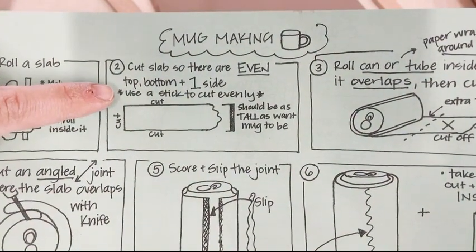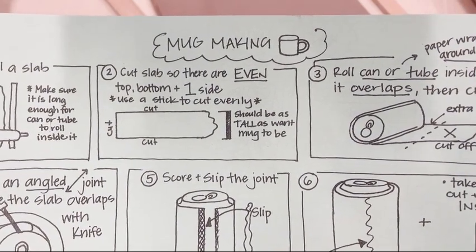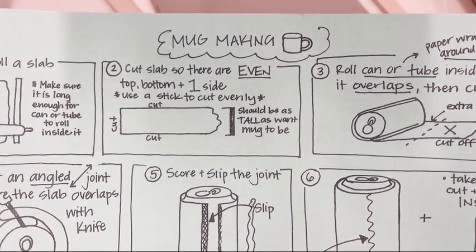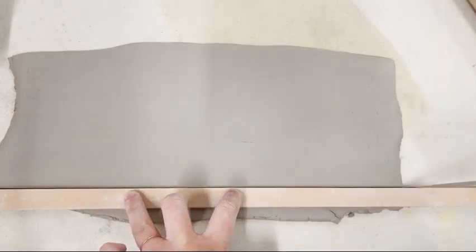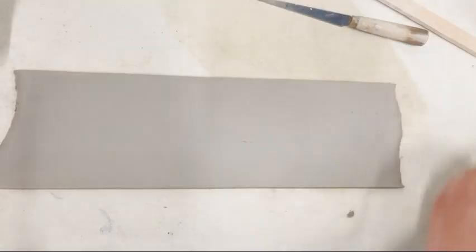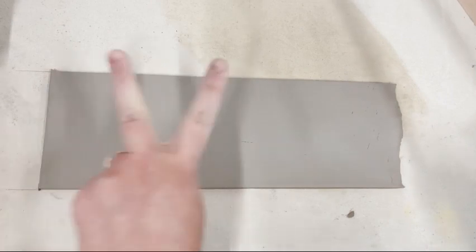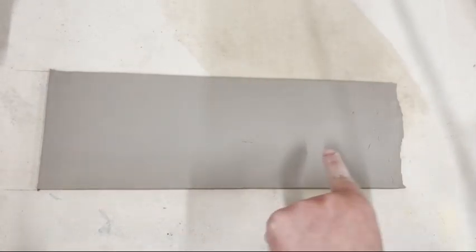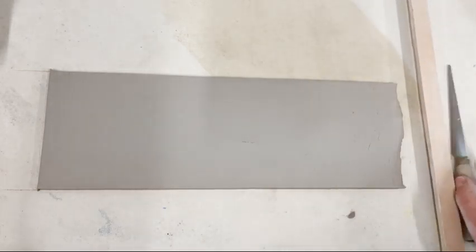Step two is to cut your slab so they're even on the top, bottom, and one side. You only want to do three sides, and you want to cut them evenly. So I'm using just one of my guide sticks to try to cut those really evenly on three sides: one, side two, side three. I'm going to leave that third side just uncut for now because I'm going to cut it later.